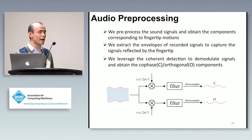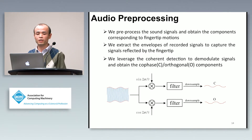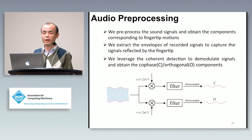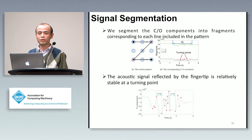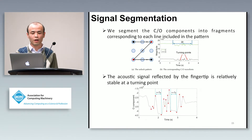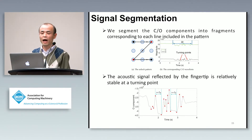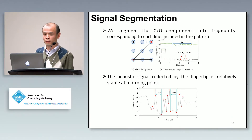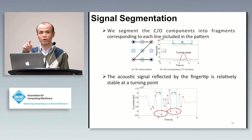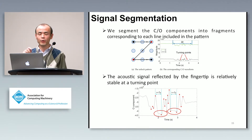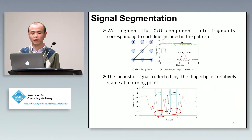We leverage coherent detection to demodulate the signals and obtain the co-phase and orthogonal components — basically, we multiply by sine and cosine functions to obtain the components. After that, we segment the components into fragments corresponding to each line in the user's pattern. We observe that the acoustic signal reflected by the fingertip is relatively stable at turning points between each line, so that we can accurately segment the components.